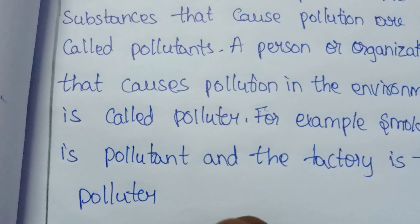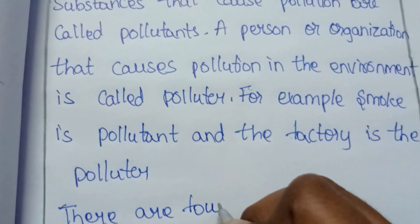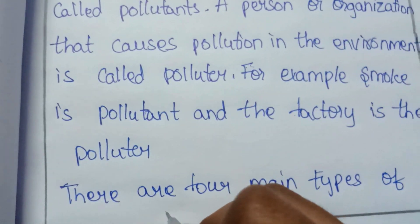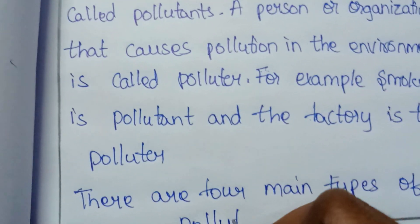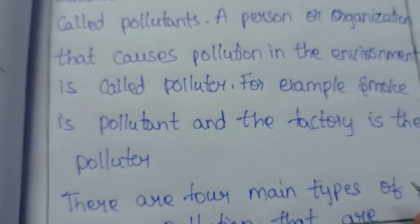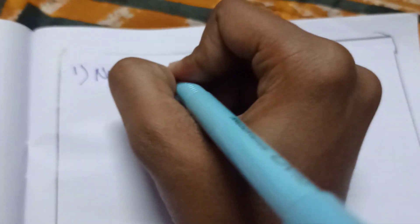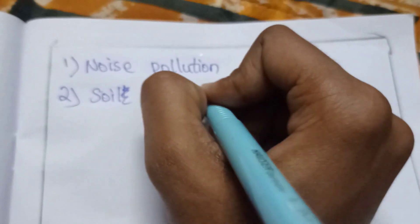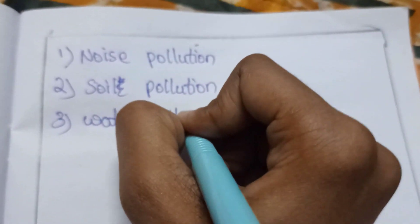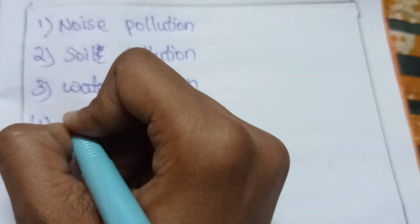There are four main types of pollution: first, noise pollution; second, soil pollution; third, water pollution; and fourth, air pollution.